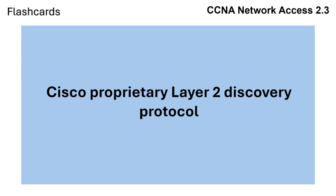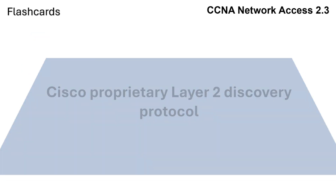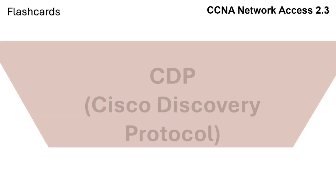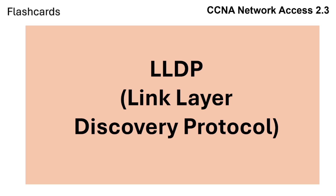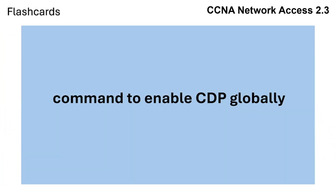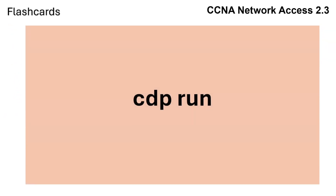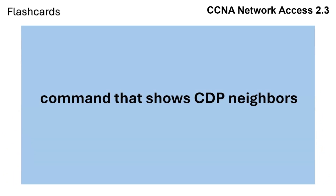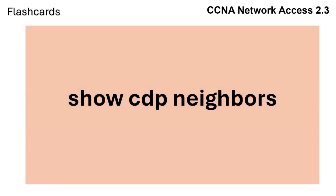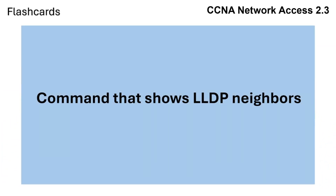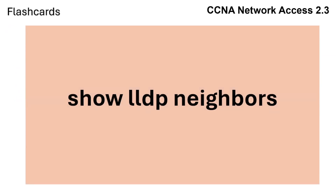Summary: CDP is the Cisco proprietary Layer 2 Discovery Protocol, while LLDP is the IEEE standard Layer 2 Discovery Protocol used in multi-vendor networks. Key commands include cdp run to enable CDP globally, show cdp neighbors to view CDP neighbors, and show lldp neighbors to view LLDP neighbors.